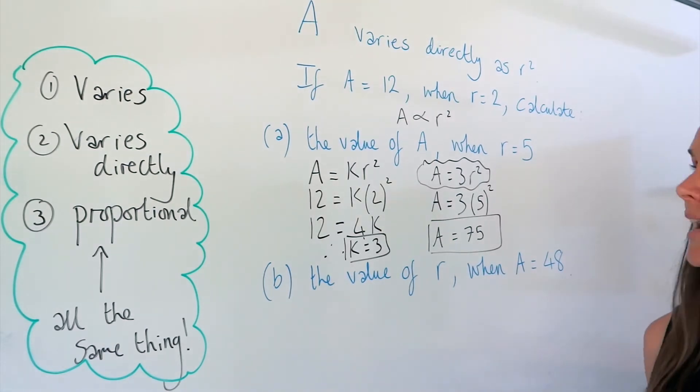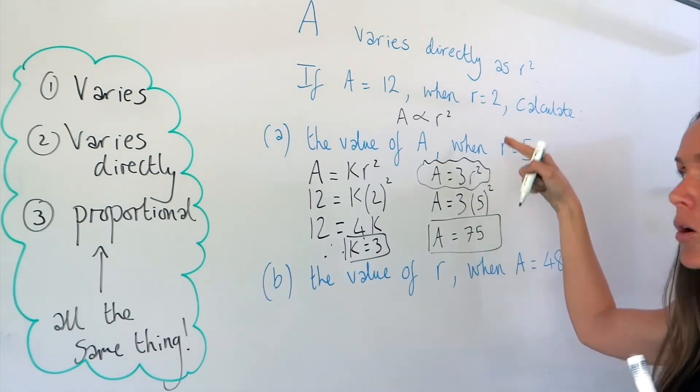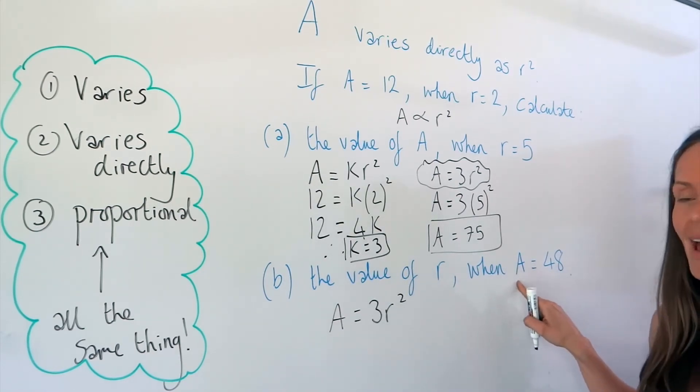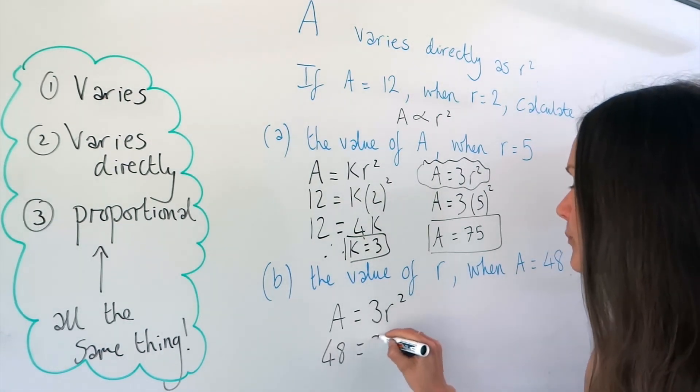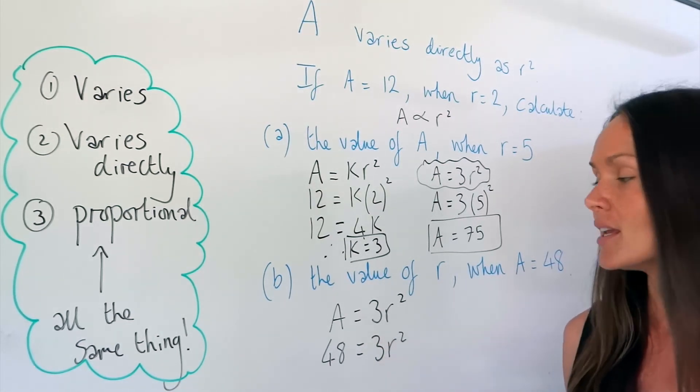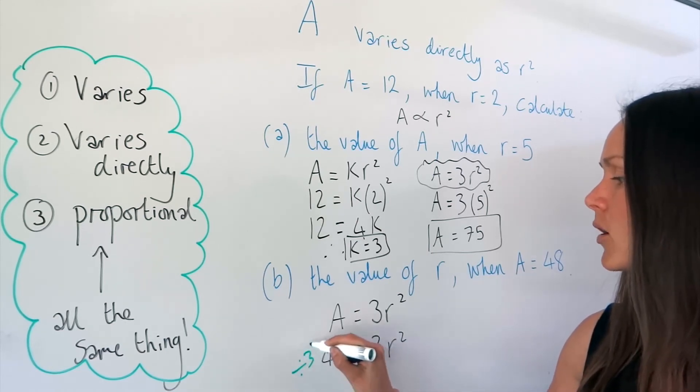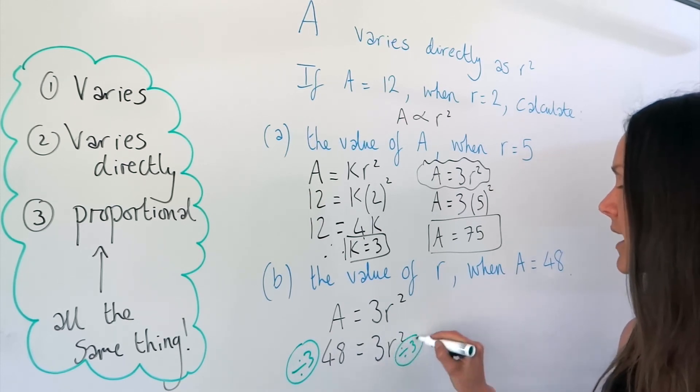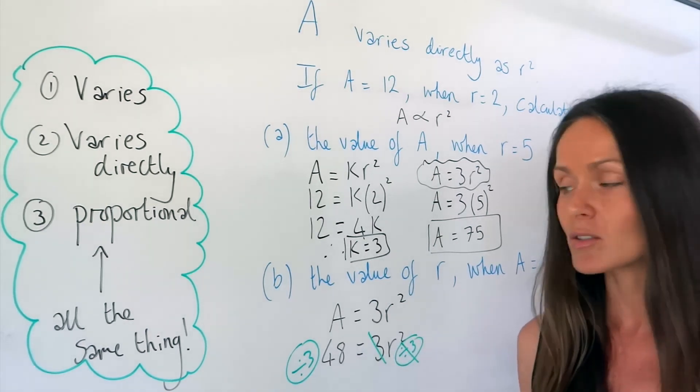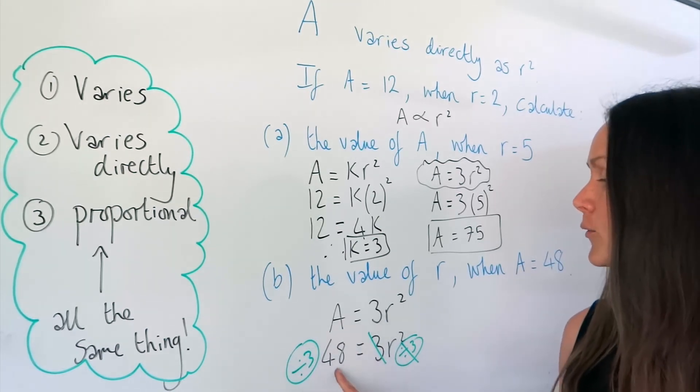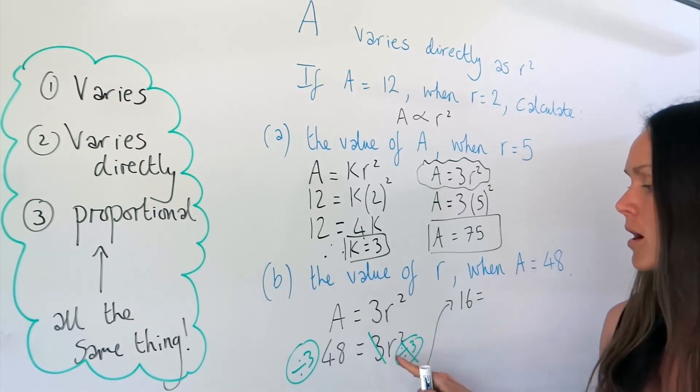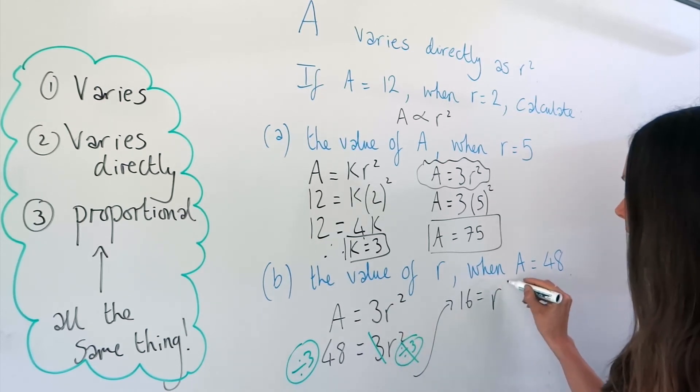Now in part b, we start by writing out that equation again. Remember, you need to use this equation all the way through the question. And this time, we need to substitute in the number 48. So I'm going to replace a with 48. And now I need to solve this equation to find the value of r. So the opposite of multiplying by 3 is to divide by 3. So I'm going to divide by 3 on the left-hand side of the equation, and divide by 3 on the right-hand side. So when I divide by 3 over here, 3 divided by 3 is just 1. So the 3s just cancel, which is what we want to happen. And on this side, 48 divided by 3, well, that gives me 16. So I've got 16 is equal to r squared.